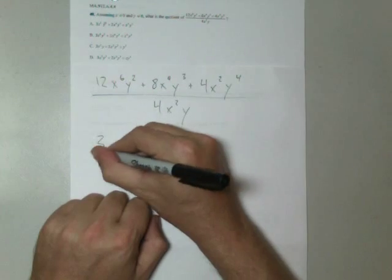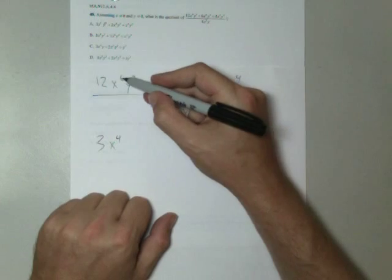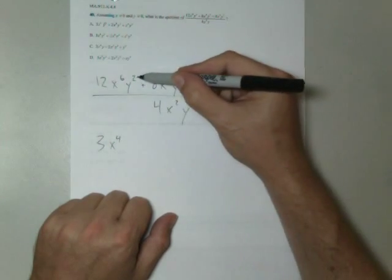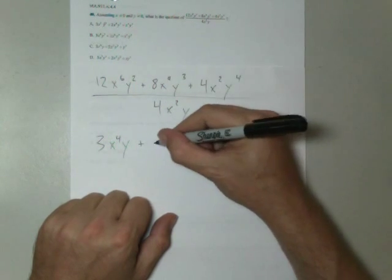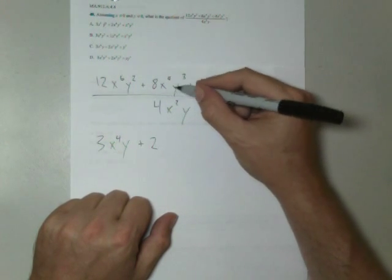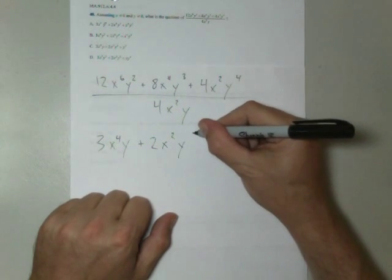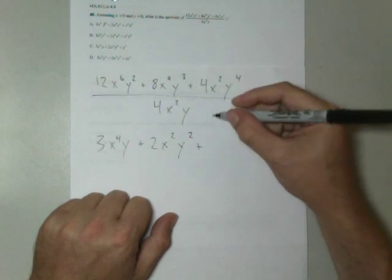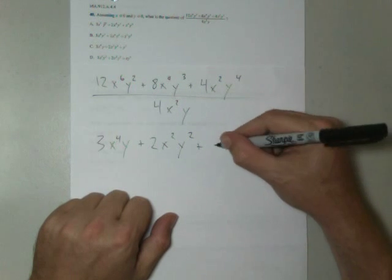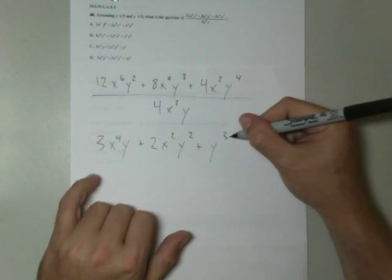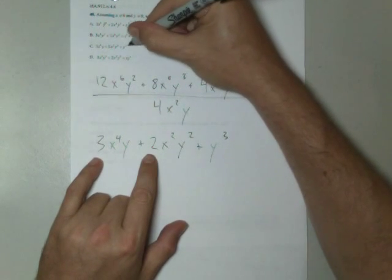12 divided by 4 is 3. x⁶ divided by x² is x⁴. Remember, we subtract our exponents. y² divided by y is y. Keep my sign. 8 divided by 4 is 2. x⁴ divided by x² is x². y³ divided by y is y². Plus, 4 cancels with the 4. x² cancels with the x². y⁴ divided by y is y³. 3x⁴y + 2x²y² + y³.